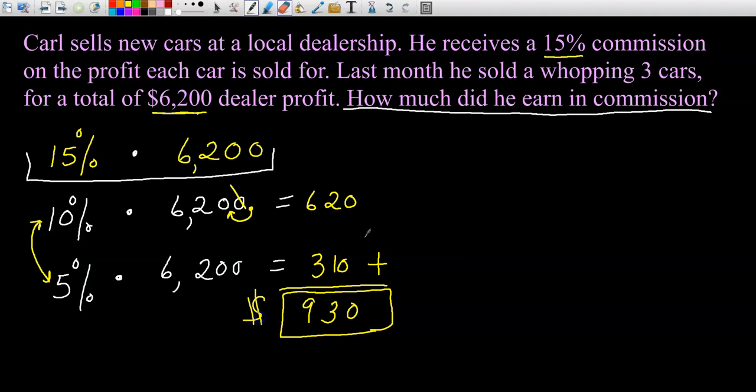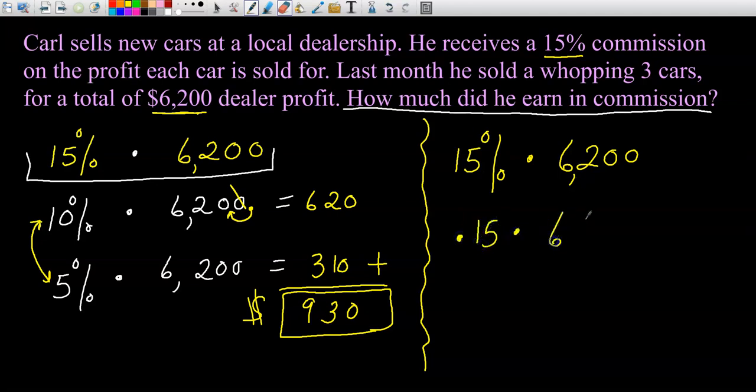So 15% of 6,200 is $930. That's his commission. Let's check this on the calculator. To do this on a calculator, you need to change the percentage to a decimal. Percent means divide by 100. So if you take 15 divided by 100, you'll get 0.15. You'll multiply that 0.15 times 6,200 and you will also get $930.